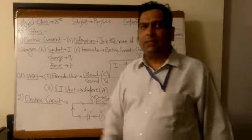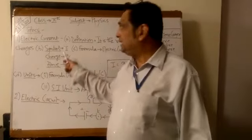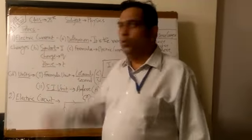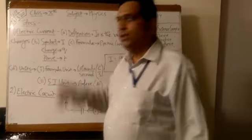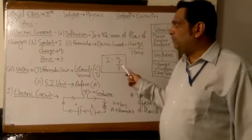If you see the symbols, in symbolic representation, the symbol of electric current is I, the symbol of charge is Q, and the symbol of time is T. So the formula becomes I = Q/T.